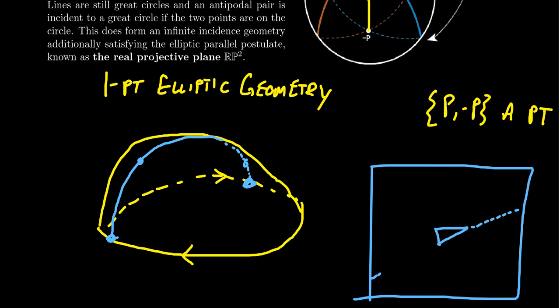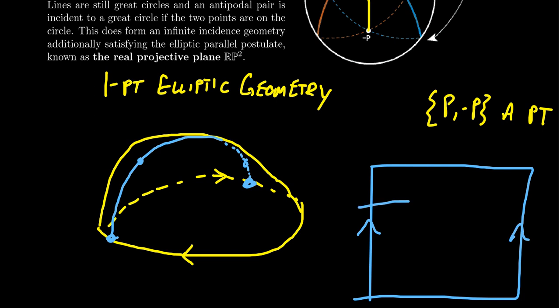If you were to wrap around the screen, you would actually come from this side over here — but Asteroids actually forms a torus, not a projective plane. When you go off the screen you come back the other side. So in other words, when it comes to a game like Asteroids, Mario Brothers has a similar feature — if you play the original one, there's this wraparound feature where when you go off one side of the screen, you come back from the other side.